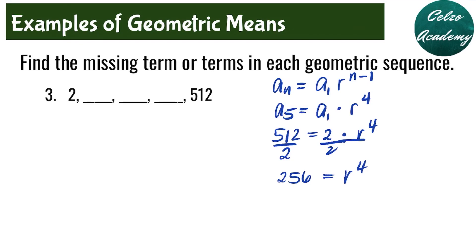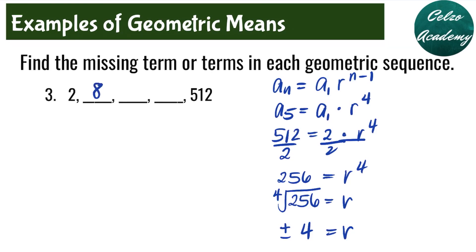Solving for r, we need to get the 4th root of both sides. The 4th root of 256 is 4, but this can be positive or negative — if the index is even, r can be both positive or negative. Using the common ratio positive 4 first: if r is 4, the second term is 2 times 4, which is 8. The next term is 8 times 4, that's 32. Then 32 times 4 is 128, and 128 times 4 is 512.